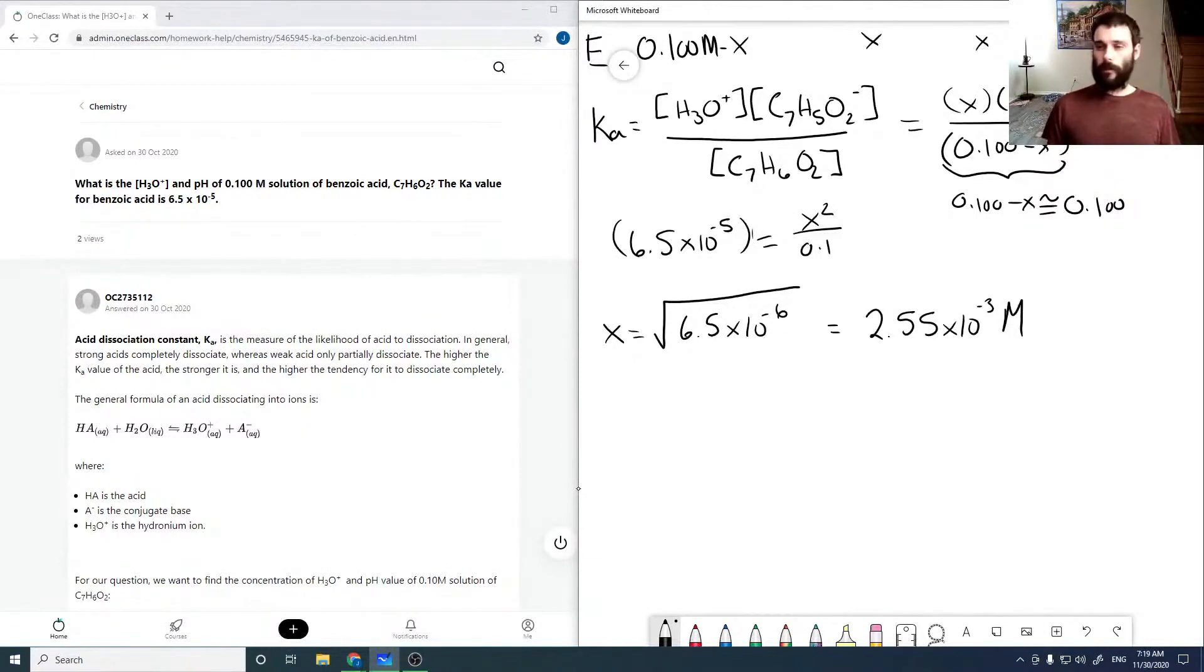Which kind of validates that assumption as 0.1 minus this is going to be approximately 0.1.